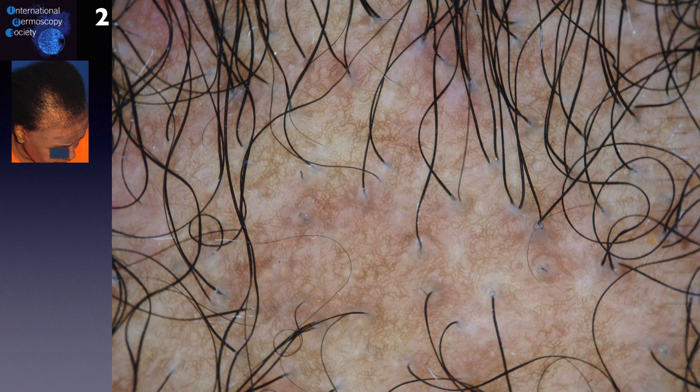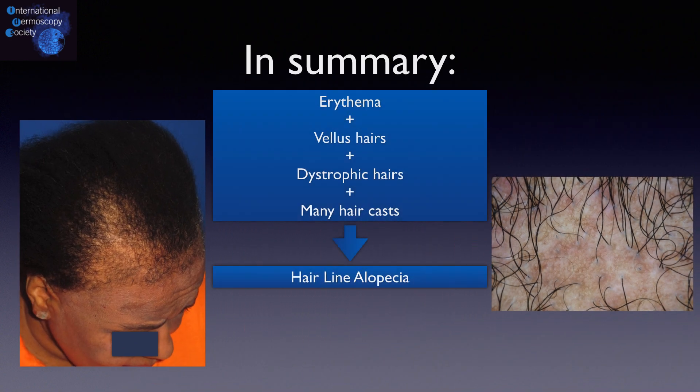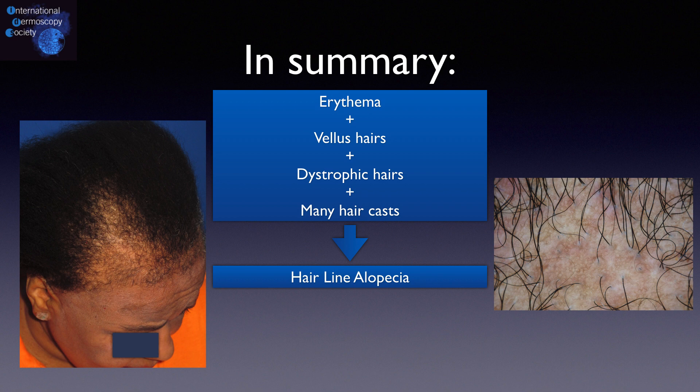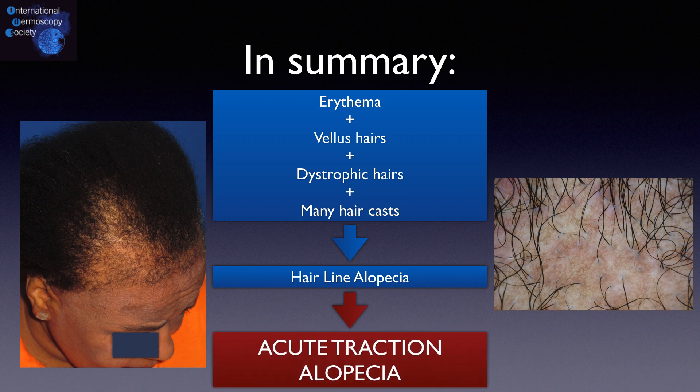Here is another tricoscopy of the same patient with no hair casts. In summary, the presence of erythema, vellus hairs, dystrophic hairs, and many hair casts placed on the hairline in a patient with a history of traction suggests the diagnosis of acute traction alopecia.